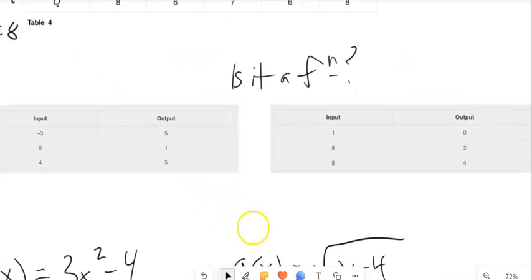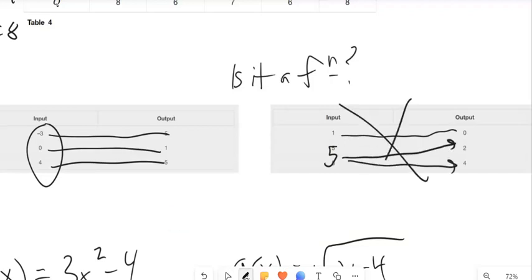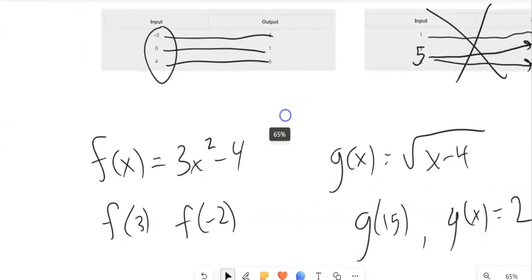Let's look at these two tables. Are they functions? 3 goes to 5, 0 goes to 1, 4 goes to 5. Input doesn't repeat itself. It's good. 1 goes to 0. But notice these 5s. These are the same 5. 5 is 5. 5 goes to 2, and it goes to 4. This one is not.